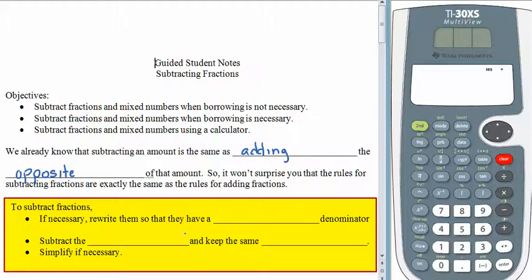Just like before, if it's necessary, let's rewrite the fractions so that they have a common denominator. When we were adding, we added the numerators and kept the same denominator. When we're subtracting, we will subtract the numerators and keep the same denominator.